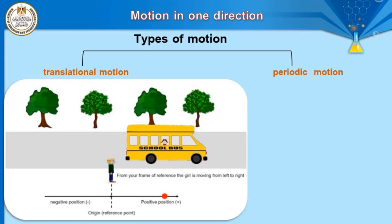Translational motion may be in a straight line, as in school bus, train, or car motion, or it may be in a curved line. So translational motion can be determined by starting point and ending point, and the object may move in a straight line, a curved line, or a parabolic path, as we discussed in prep two.